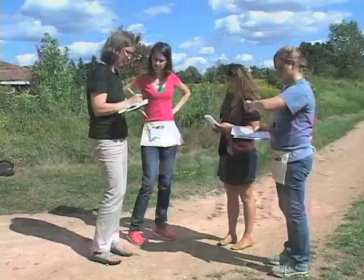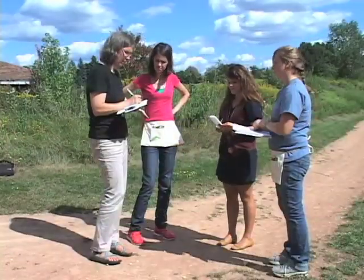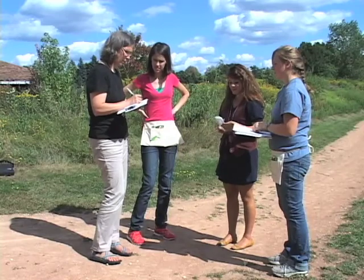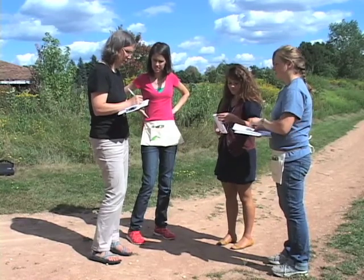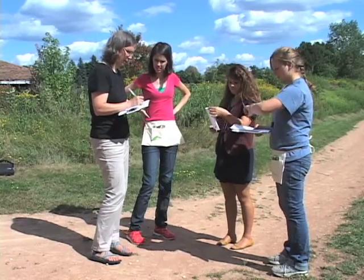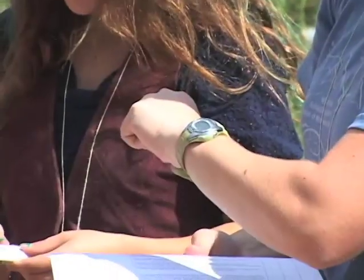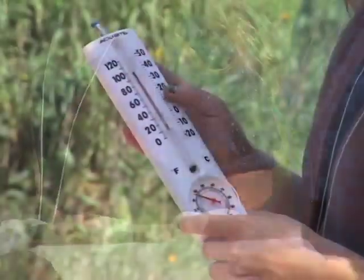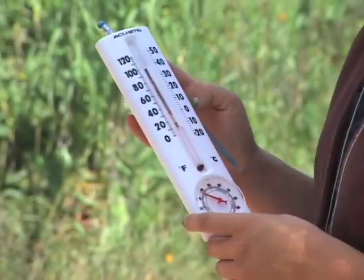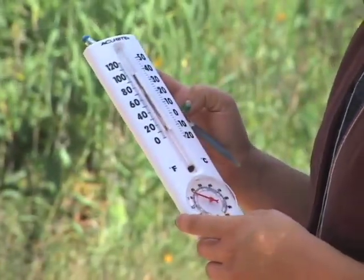When we get to our site, we first fill in the date, names of the observers, our site name and location, the time we're starting, and the temperature and the shade at the top of the datasheet.